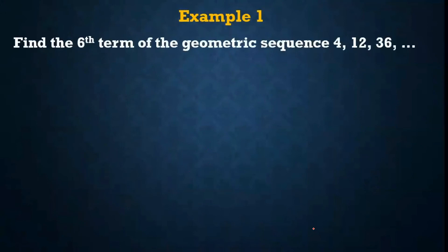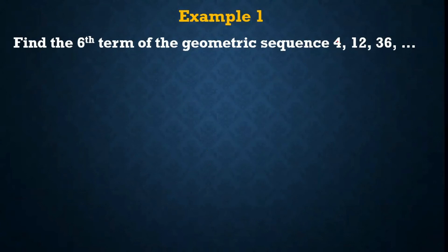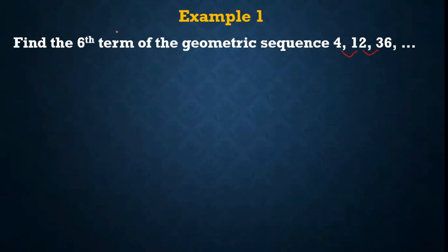Proceed tayo sa next example. Example number 1: find the sixth term of the geometric sequence 4, 12, 36. Ilagay natin sa real-life example: sa first day, yung case ng COVID is 4; pagka second day is 12; then pagka third day is 36 yung cases ng COVID. Using that sequence 4, 12, 36, meron silang common ratio na 3, because 36 divided by 12 is 3, and 12 divided by 4 is 3. Therefore, the common ratio is 3. Ilan kaya yung magiging case ng COVID pagka sixth day?